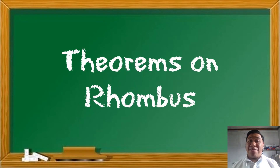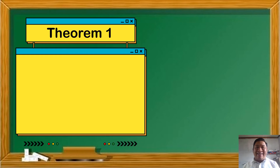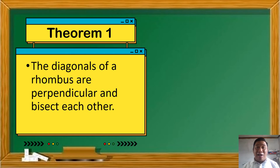Now, let's have the theorems on rhombus. Remember that rhombus is a parallelogram with four congruent sides. Theorem number 1: the diagonals of a rhombus are perpendicular and bisect each other. Ang sabi sa theorem na ito, yung mga diagonals daw ng rhombus ay perpendicular to each other — pag sinabi nating perpendicular, nag-i-intersect sila at nakabuo ng right angle. And then, ang sabi rin sa theorem na ito, na yung mga diagonals na yun bisect each other — kinahatingla yung isa't isa into two congruent parts.